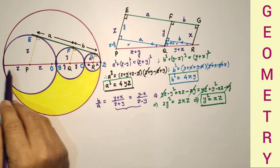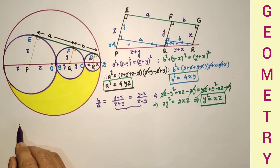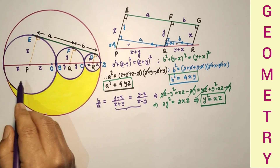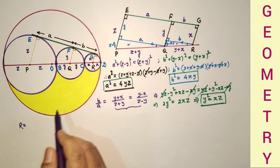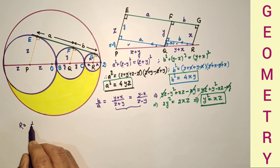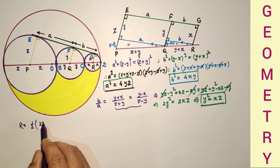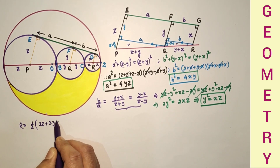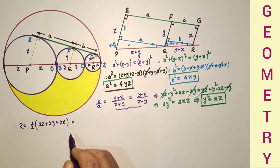The radius of the bigger circle R is equal to (2Z plus 2Y plus 2X)/2, which is half of 2Z plus 2Y plus 2X, and that equals X plus Y plus Z.